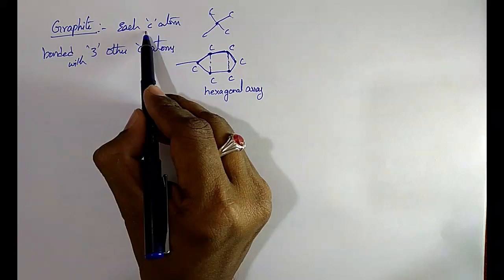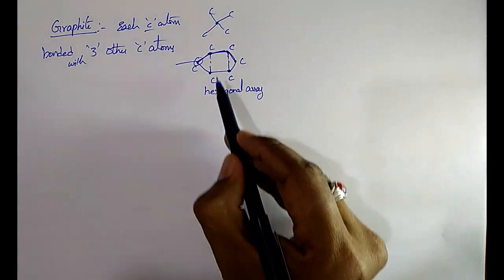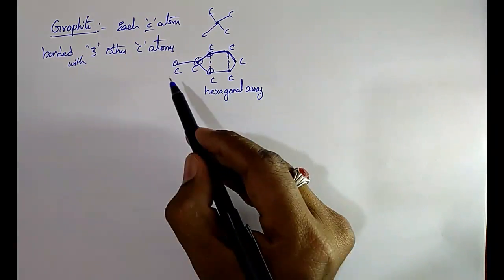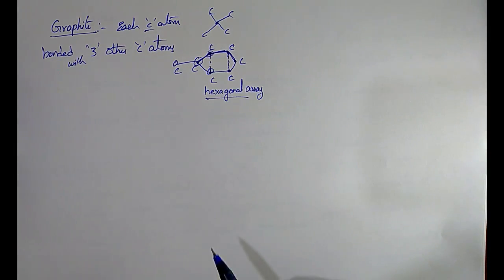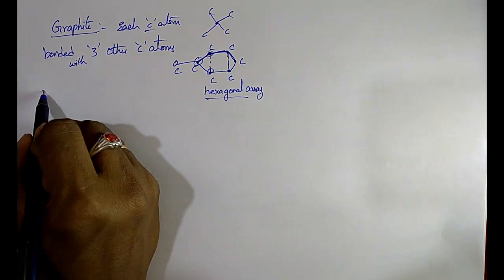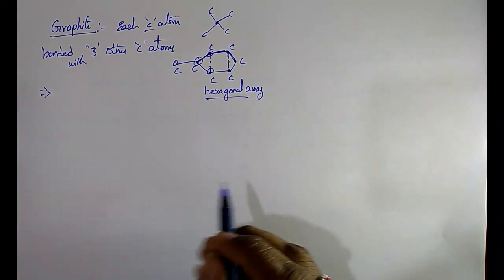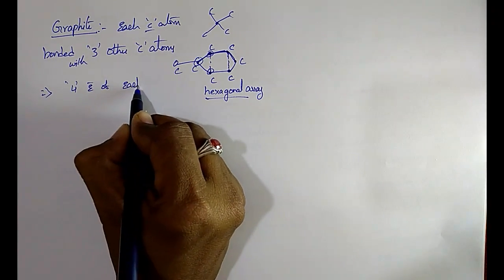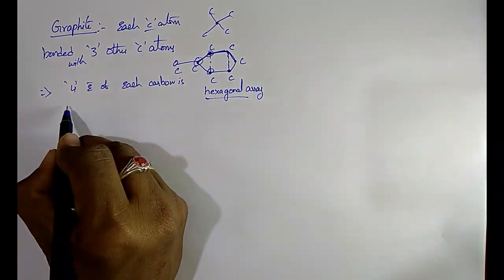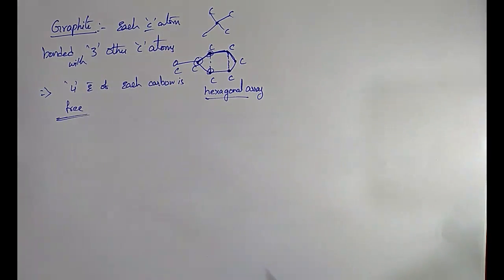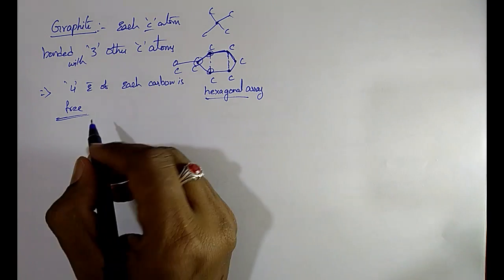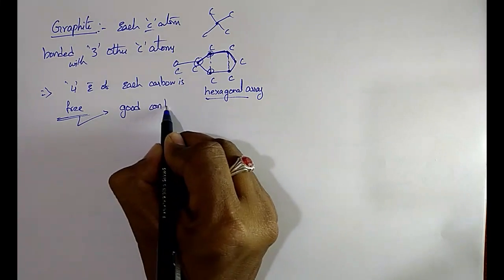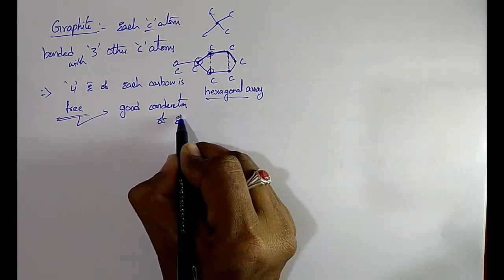In graphite, each carbon atom is bonded to 3 other carbon atoms. So the 4th electron of each carbon is free. Because of these free electrons, graphite acts as a good conductor of electricity.